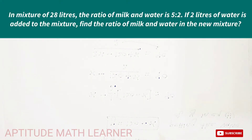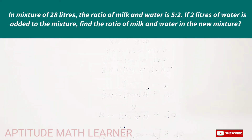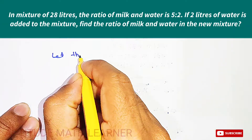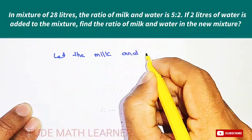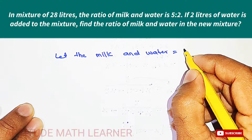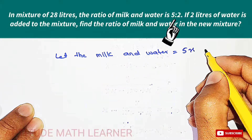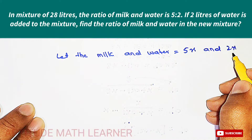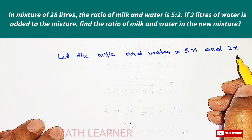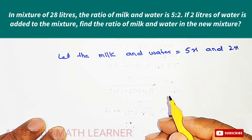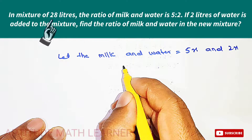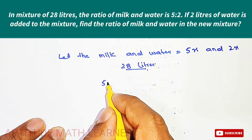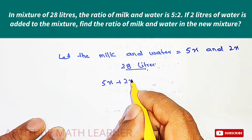The first thing we have to find out is the quantity of milk and water in the present mixture. They are in the ratio 5x and 2x — so milk is 5x and water is 2x. The present mixture is 28 liters.